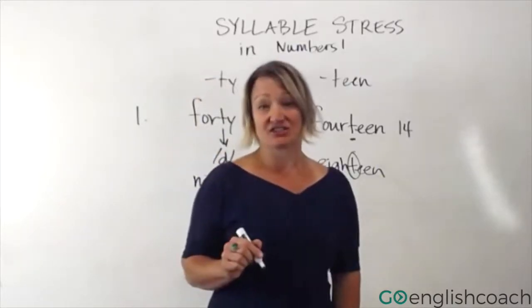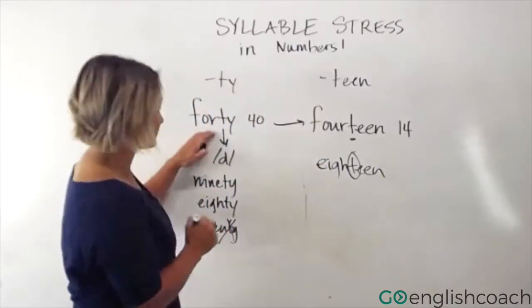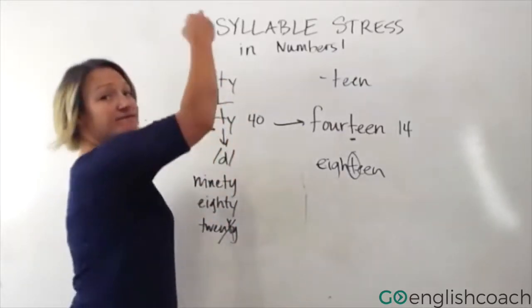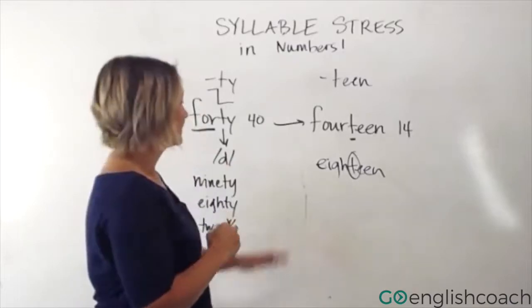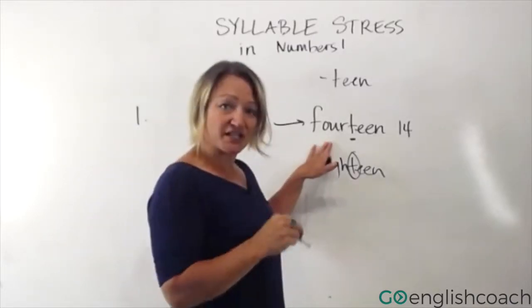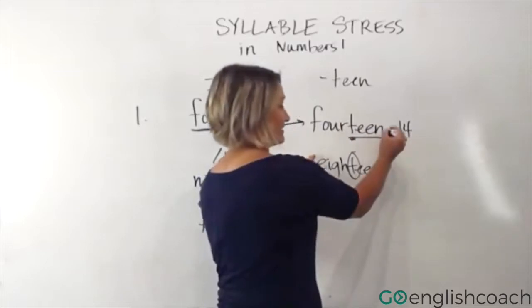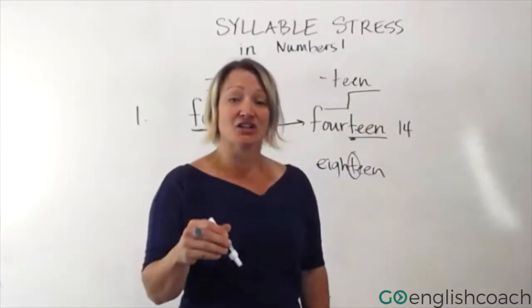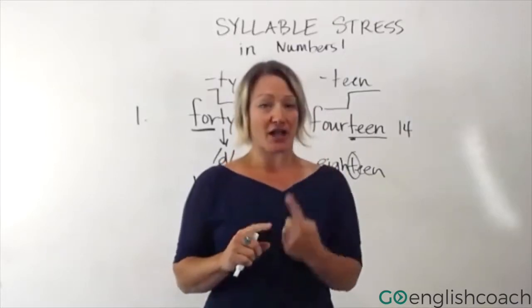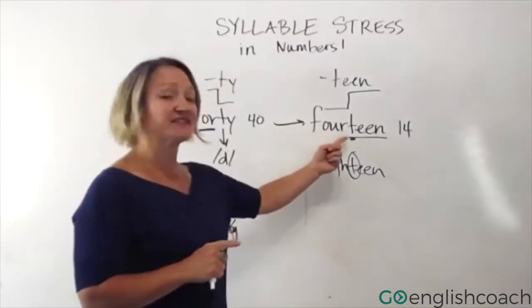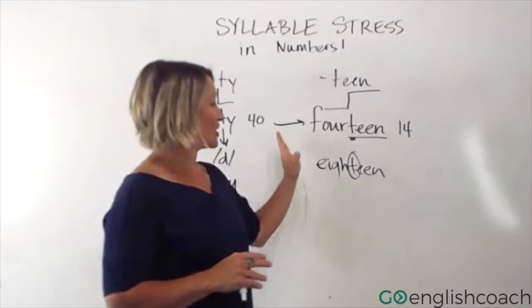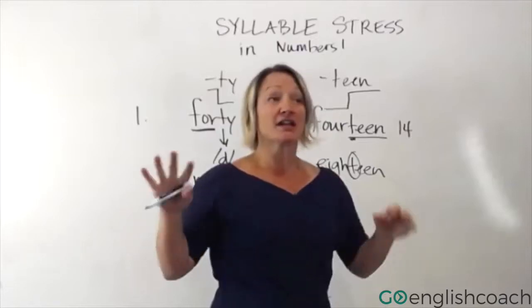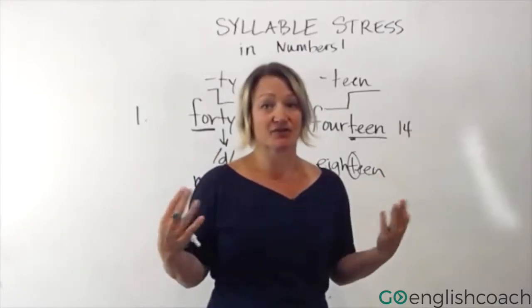And the stress has changed. The stress in 'forty' is on the first syllable — 'FORty' — you're doing that stair step down. The stress in 'fourteen' is on the second syllable — 'forTEEN' — we're going up at the end. Those two things are different: you pronounce the T in the teens, and you change the stress. Those two pieces will help your English sound way more clear when talking with numbers.